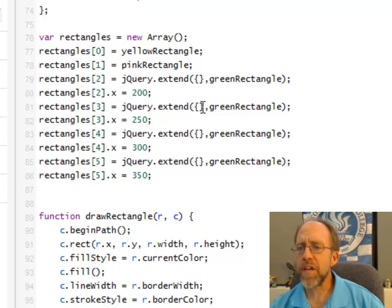which will allow you to extend the properties of the green rectangle to a new object, which is also a rectangle, has all the same properties, but it's a copy of that.